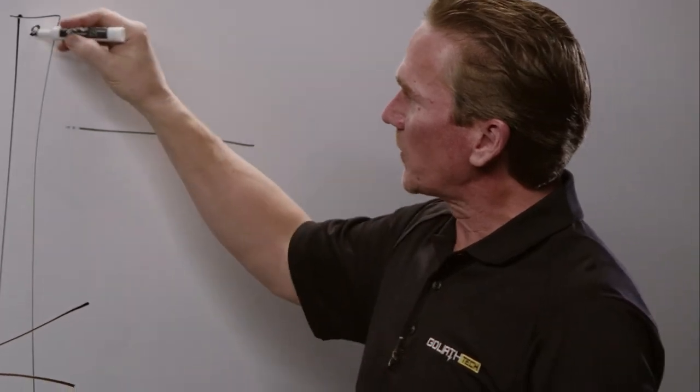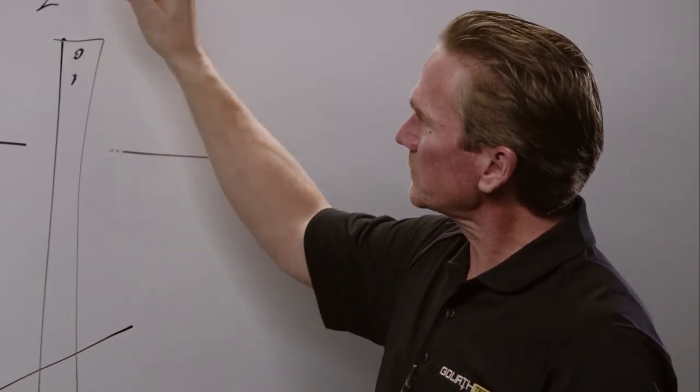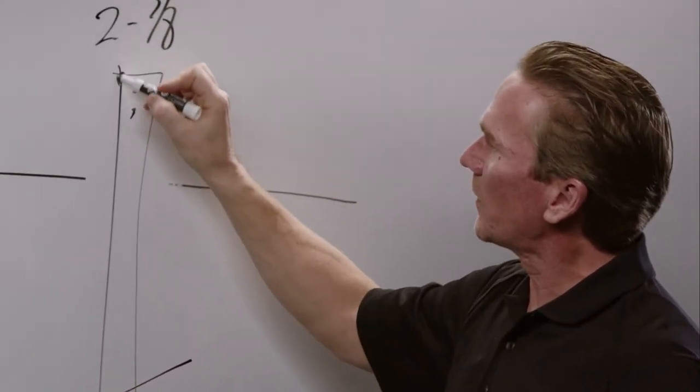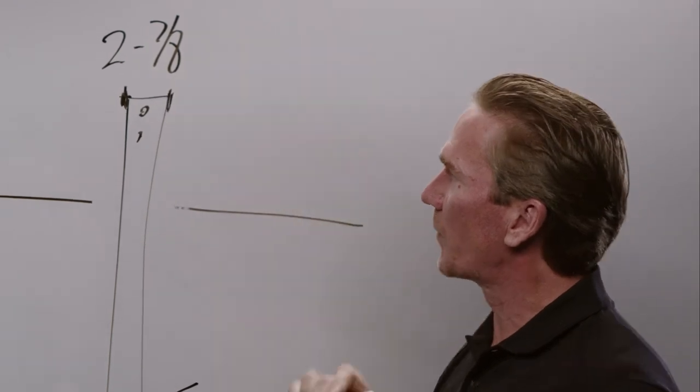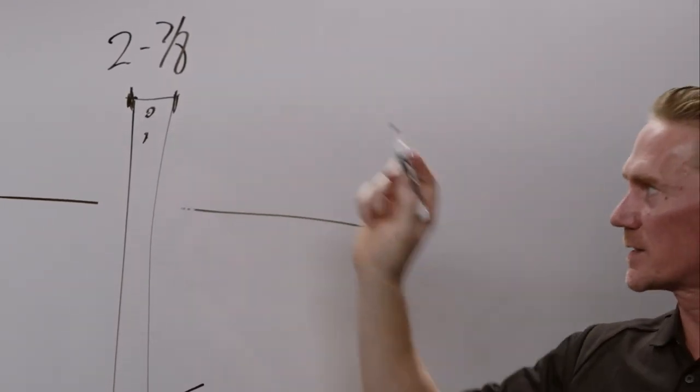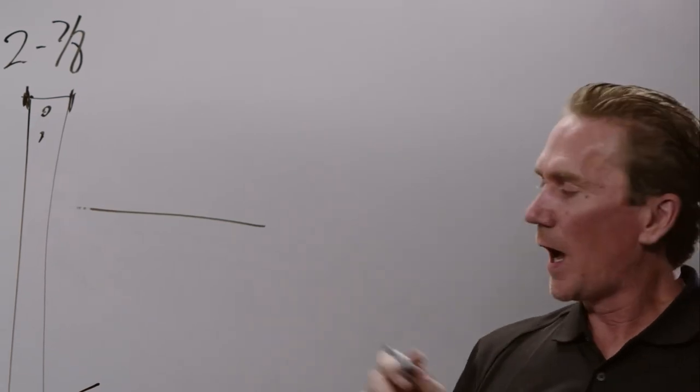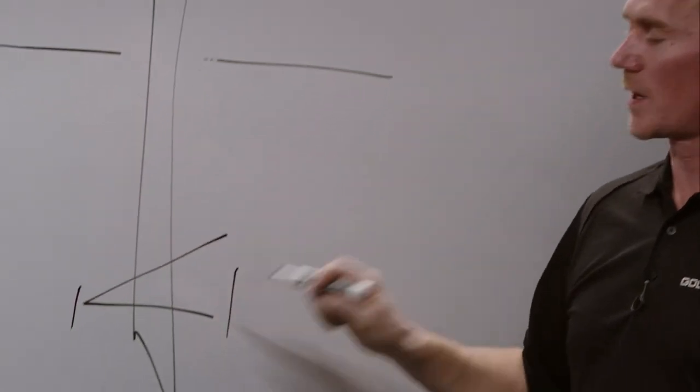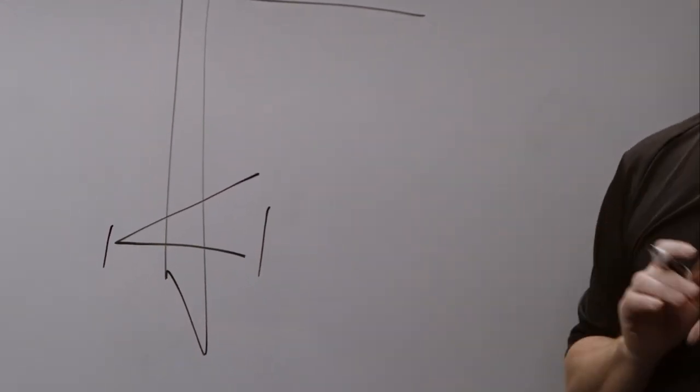So if I say we have a two and seven eighths pile, our outside diameter of our pile is two and seven eighths inches. I'm not talking about the actual size of the helix. We'll get to that shortly.